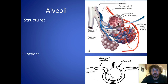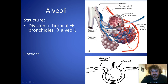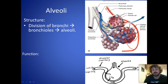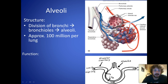Now we get down to the alveoli — this is where it gets complicated. It's a division of the bronchi down into bronchioles, which are smaller, and they split into alveoli at the terminal end — the very end, it doesn't go further than that. You've got about 100 million alveoli per lung.